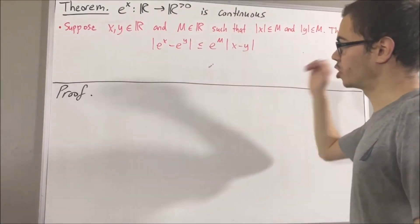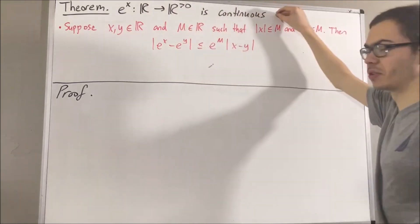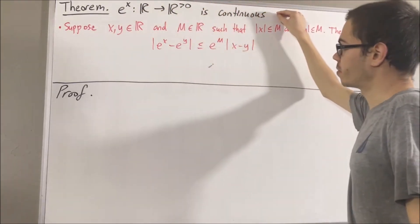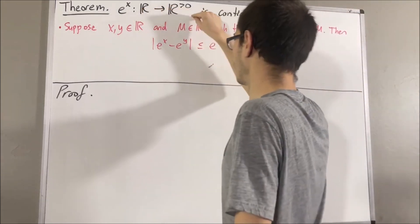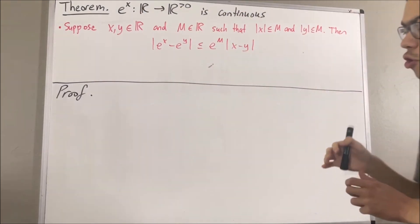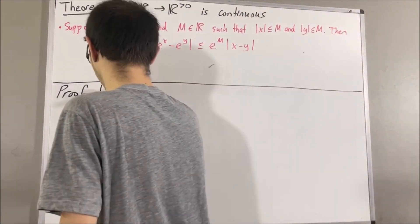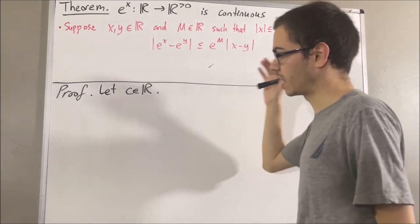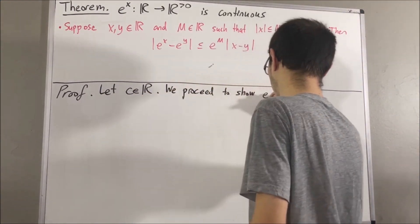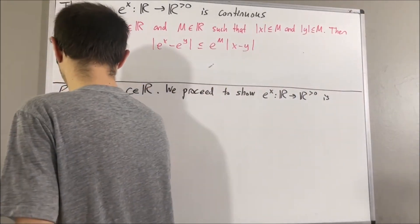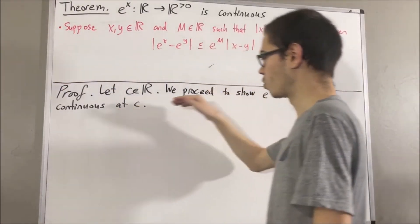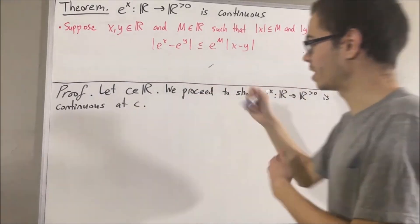Now let's get into proving that the exponential function is continuous. To prove the exponential function is continuous, this means we're trying to prove that the exponential function is continuous at every real number. So let's first give ourselves an arbitrary real number c. From here, we want to show that the exponential function is continuous at c.